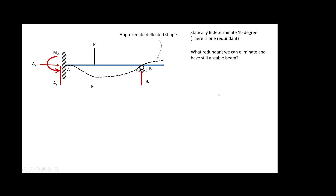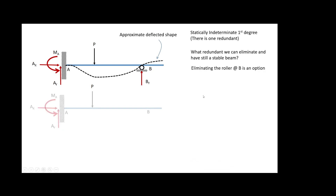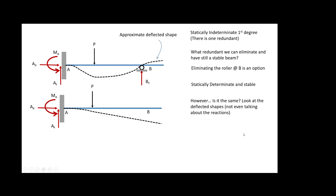First, you have to select a redundant. A redundant refers to those reactions that are extra on top of the equations of equilibrium, but those reactions have to be chosen very carefully because the beam or structure has to remain stable. For example, if we eliminate the roller here, that structure is still stable and statically determinate.